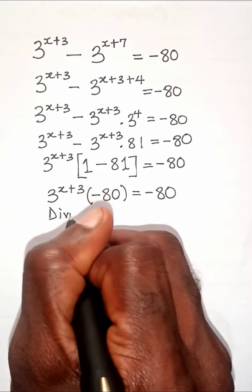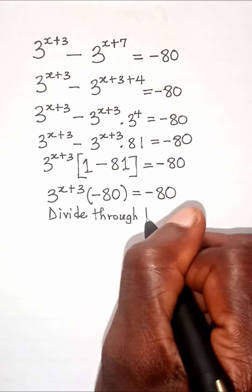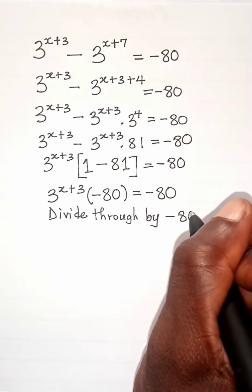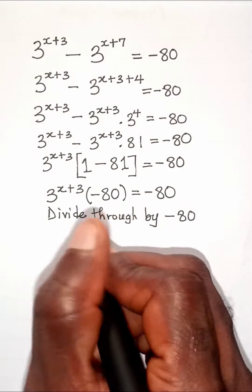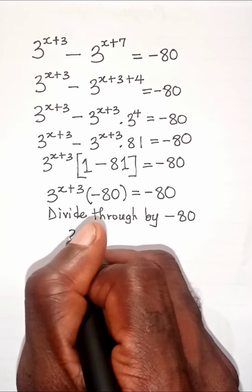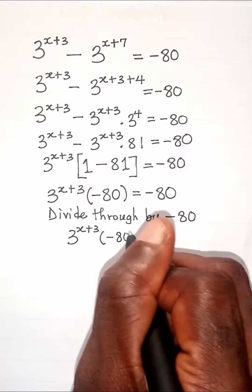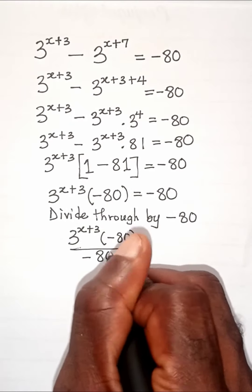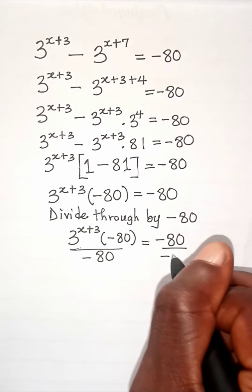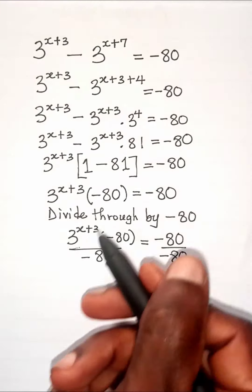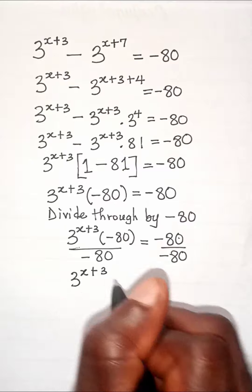Then we divide both sides by negative 80. So we can write this as 3 raised to the power of x plus 3, multiplying negative 80, divided by negative 80, equals negative 80 over negative 80. That leaves us with 3 raised to the power of x plus 3 equals 1.